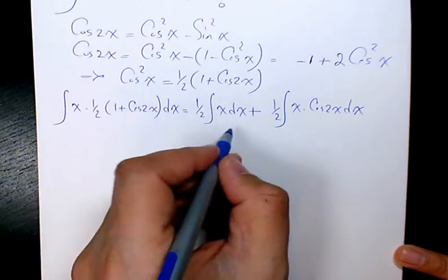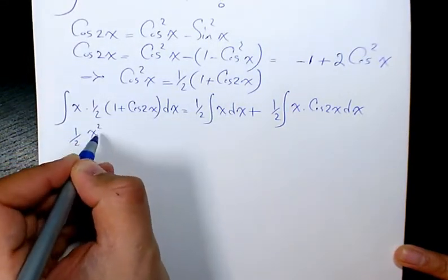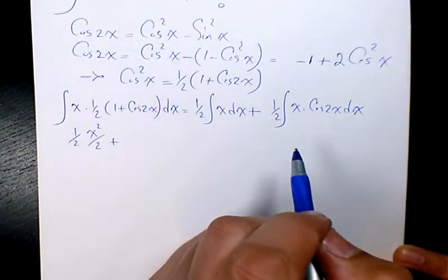The integration of the first one is going to be 1 over 2 x squared over 2. And for the second one, I need to use integration by parts.